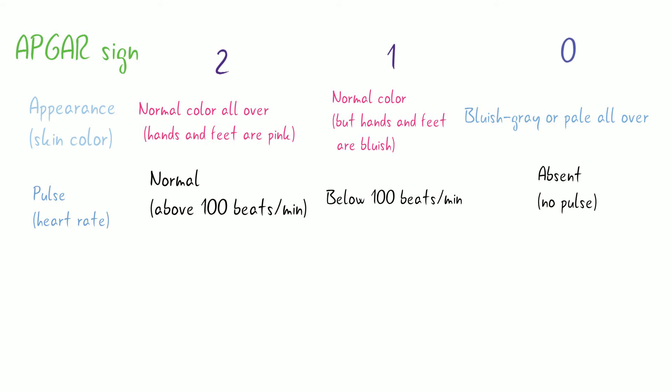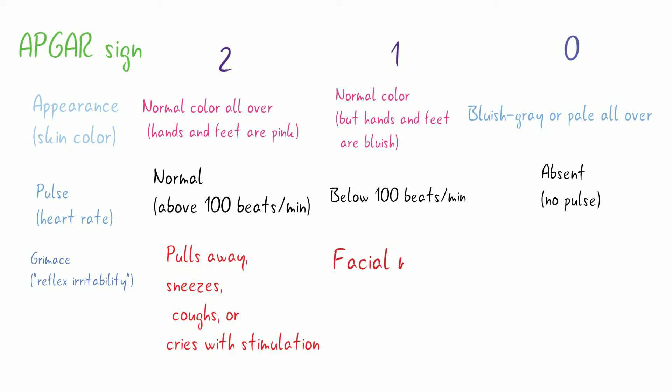For Grimace Response, 2 is given when the baby sneezes, coughs, or cries with stimulation. 1 is given for facial movement or grimace only with stimulation. 0 is given for absent response, no reaction to stimulation.